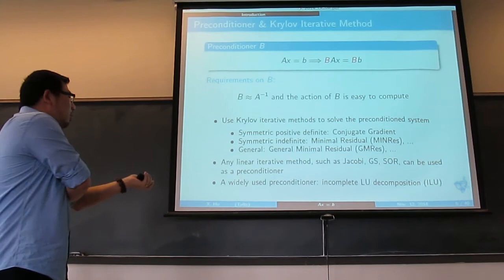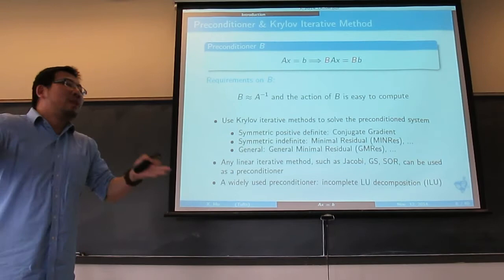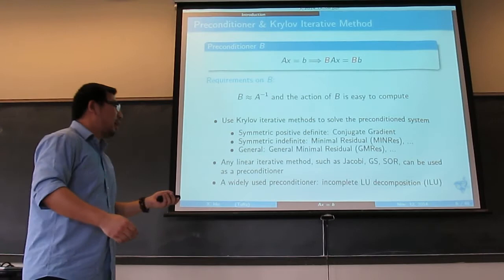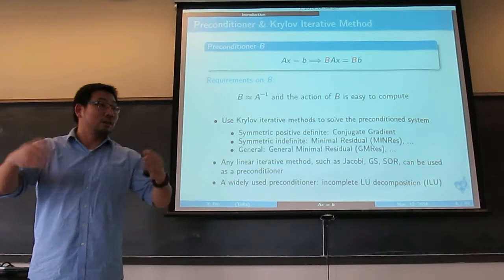A widely used preconditioner is incomplete LU decomposition. It comes from the direct method — you just don't complete your LU decomposition; you drop some small entries. The problem with that one is again the cost: you don't have control of the cost, and maybe it's too expensive.